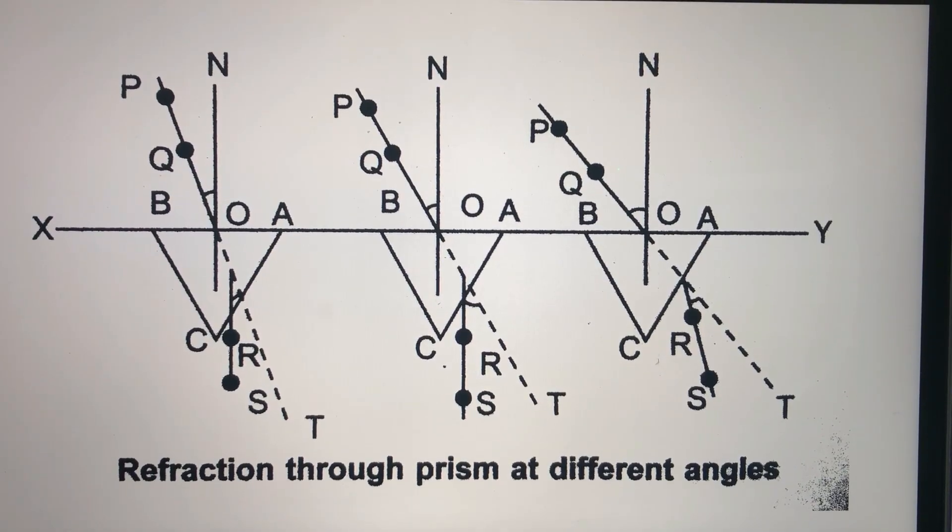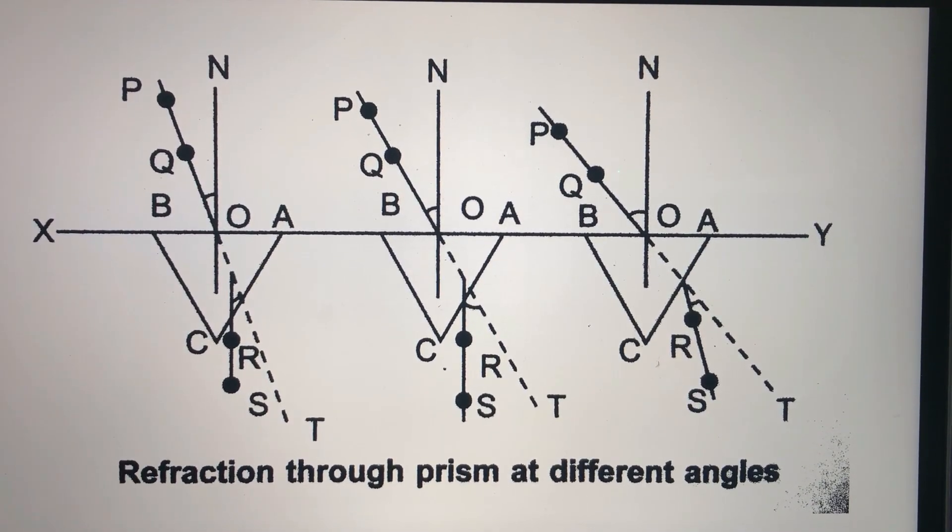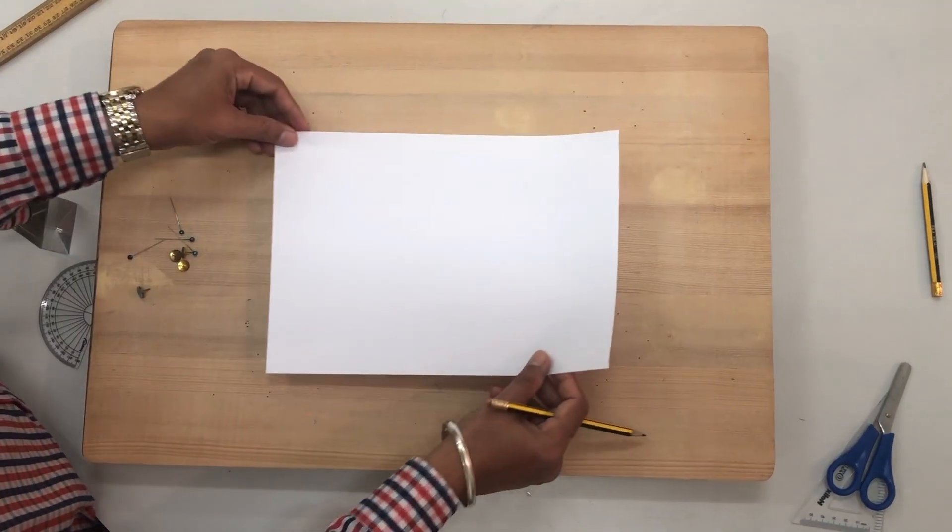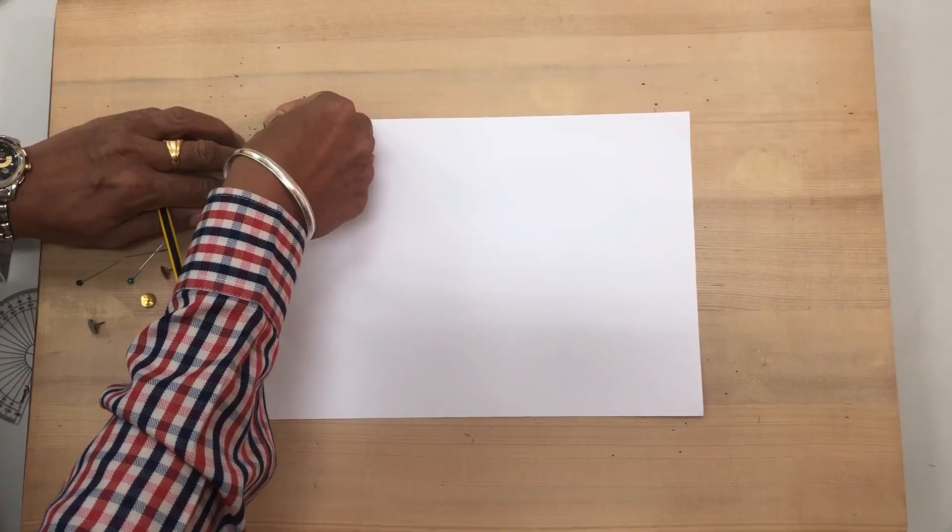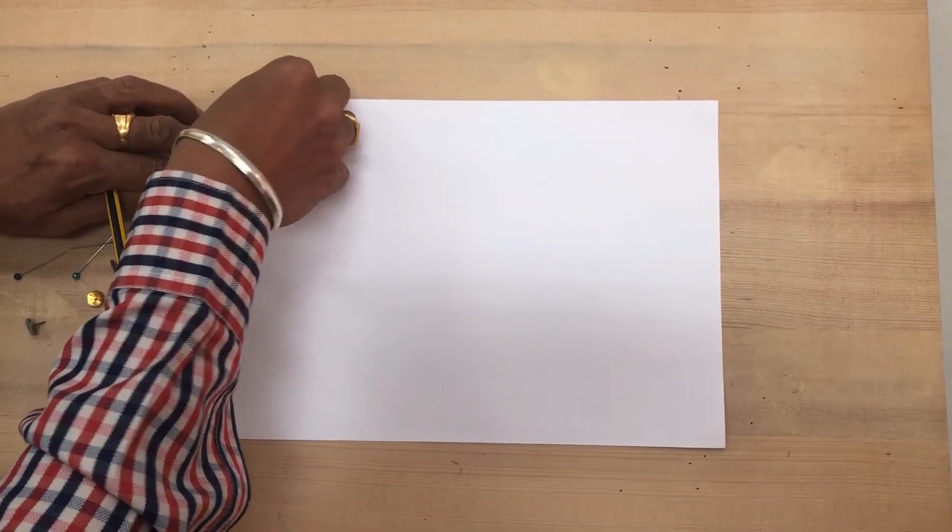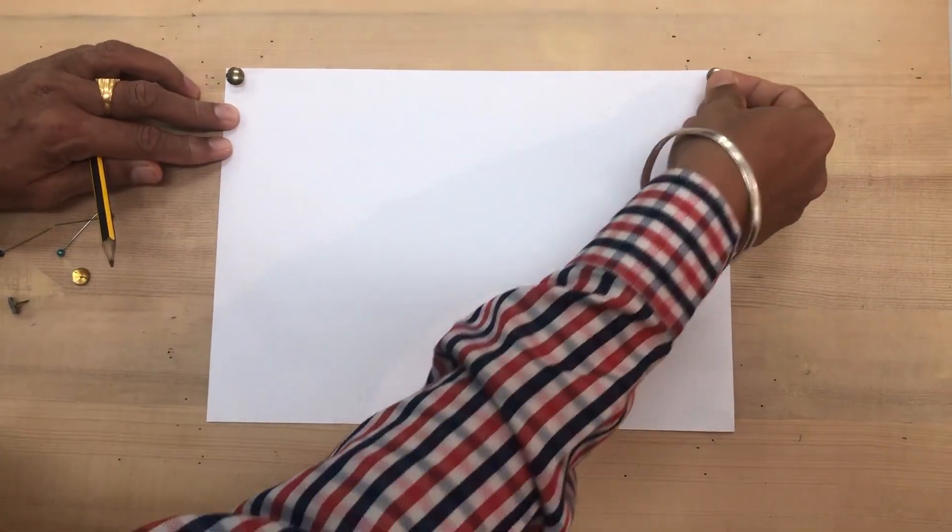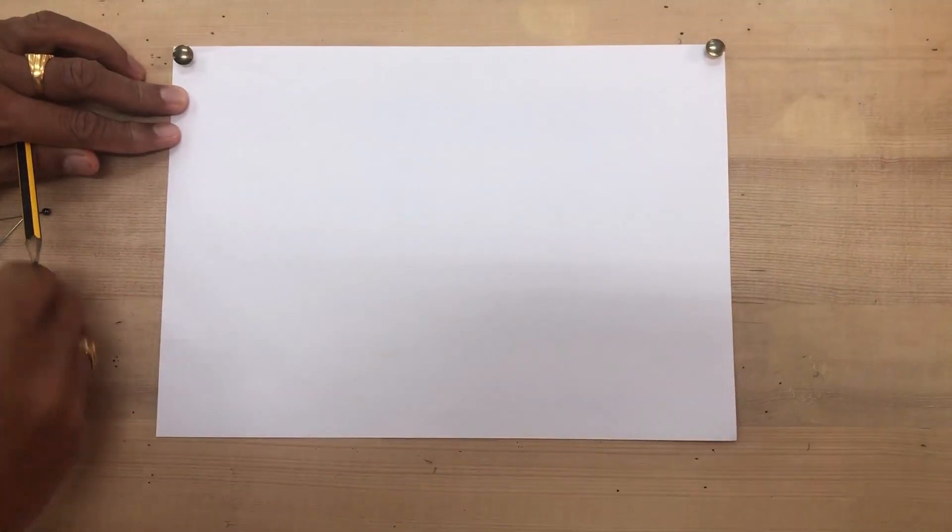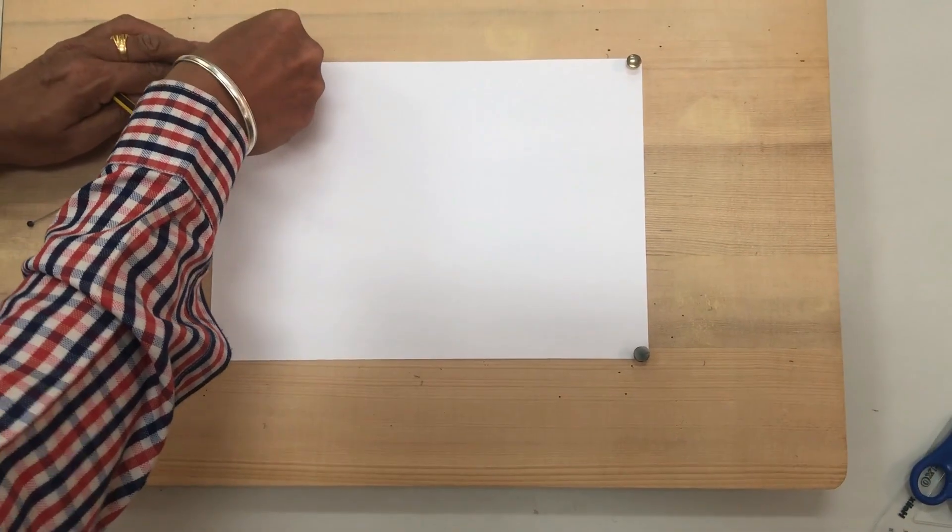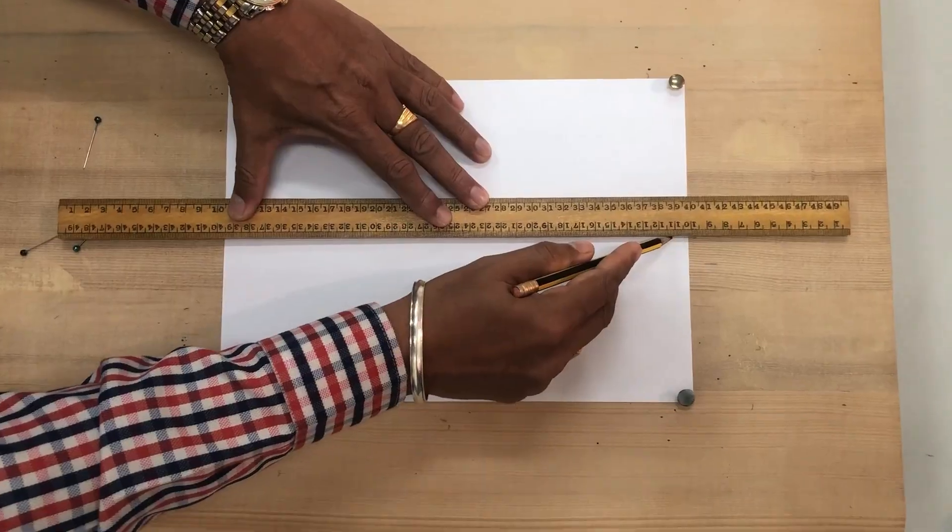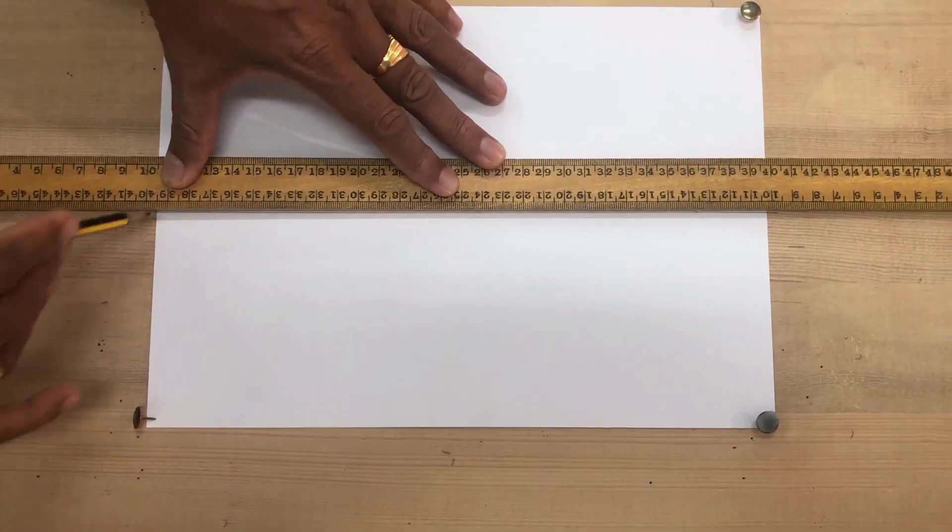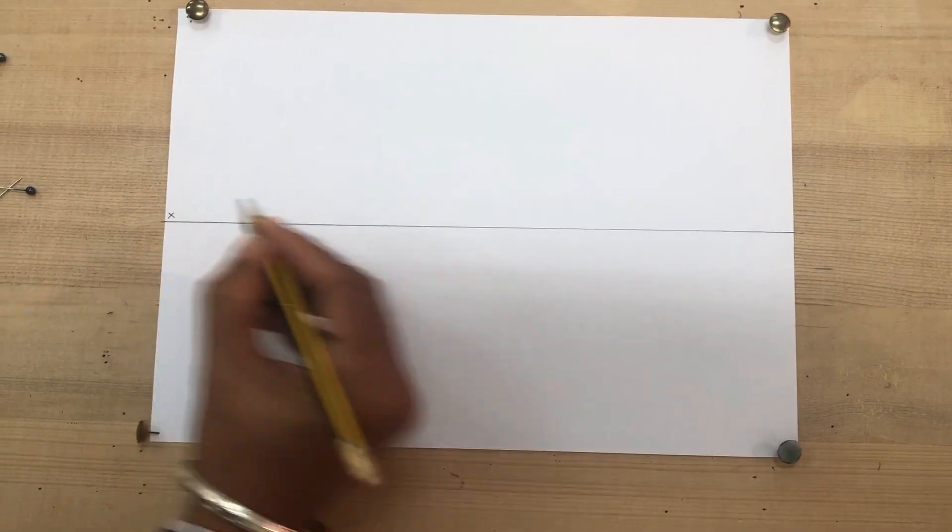This is the diagram for refraction through prism at different angles. Place a white sheet on the drawing board. Secure the white sheet with bell pins. With the help of a meter scale, draw a line. Mark this line as XY.